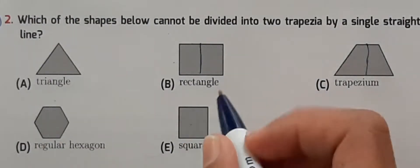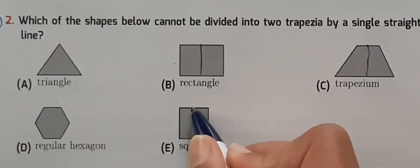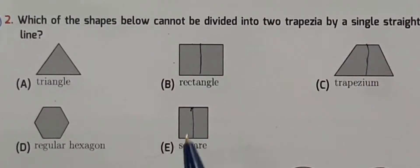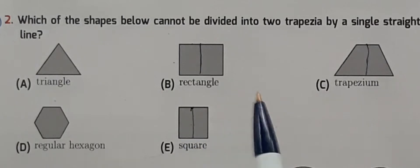Now let's check the square. If we draw a line like this, it also has four sides and makes trapeziums, with two lines parallel to each other.